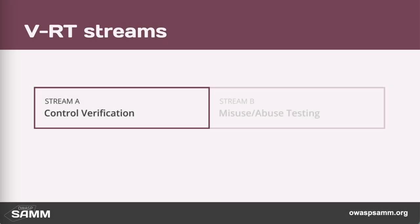The control verification stream is about helping testers understand that security requirements are just requirements. We're going to test them like anything else, automate them, and get them into the test suites and then run them in our build and deploy pipelines.